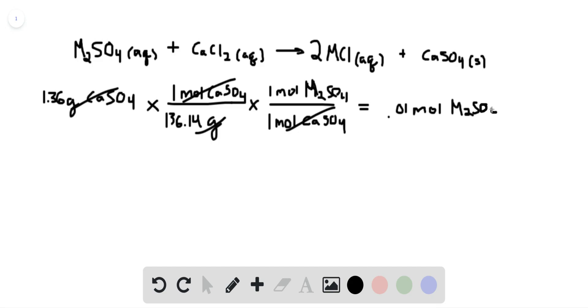So based on the mass of precipitate formed, we can figure out what the number of moles of M2SO4 is. Thankfully it tells us that they put 1.42 grams of M2SO4 into the reaction to begin.